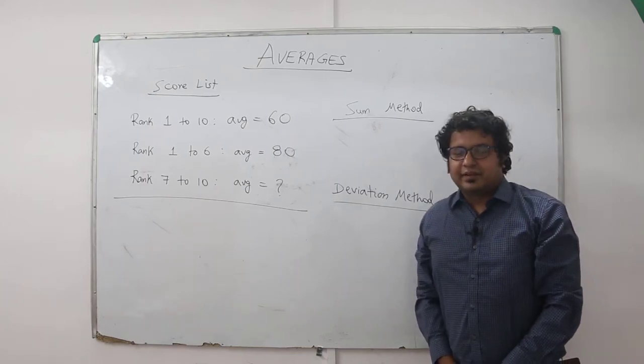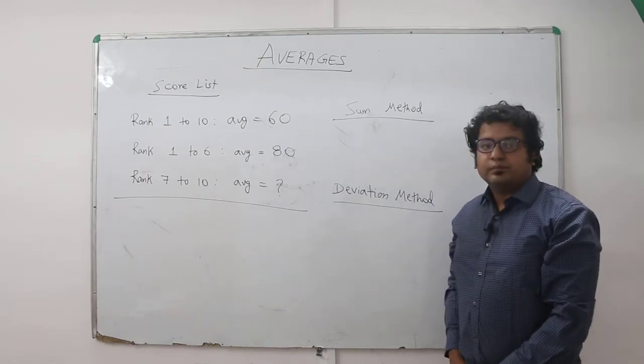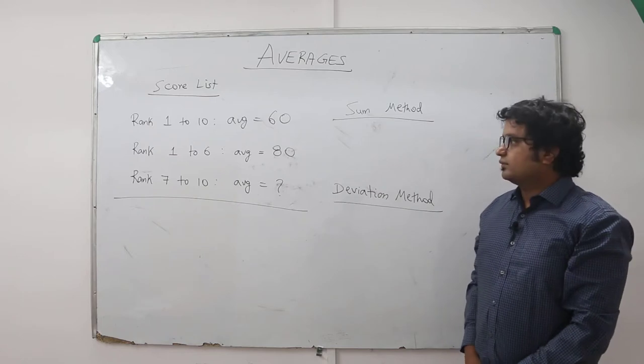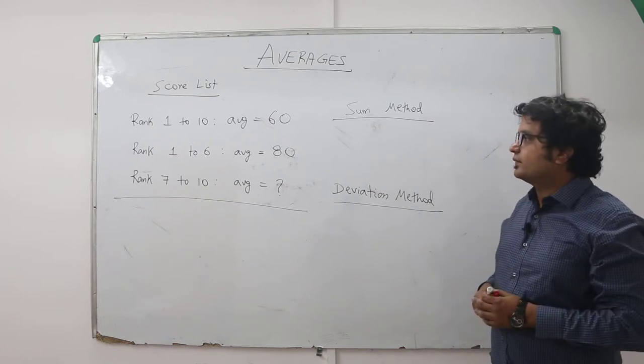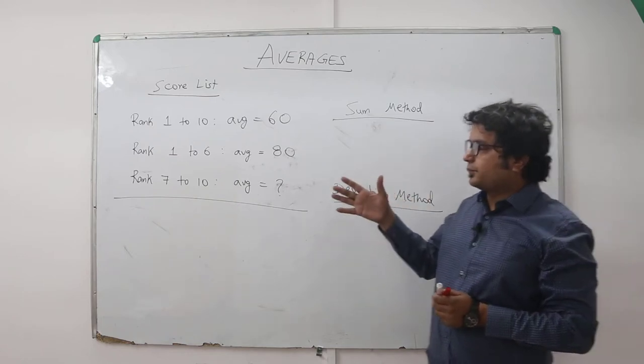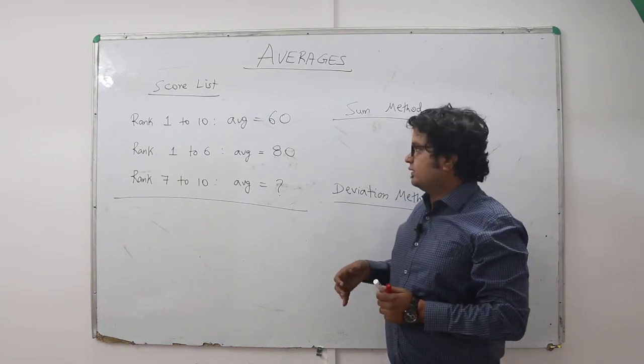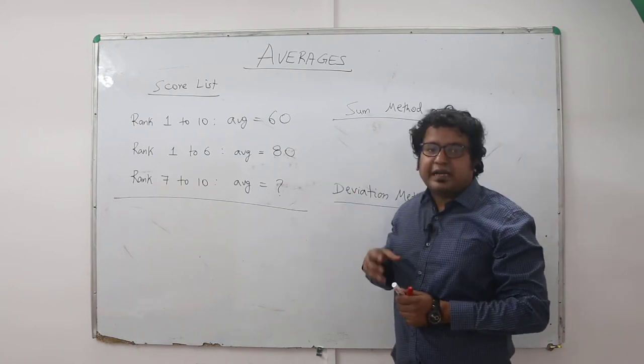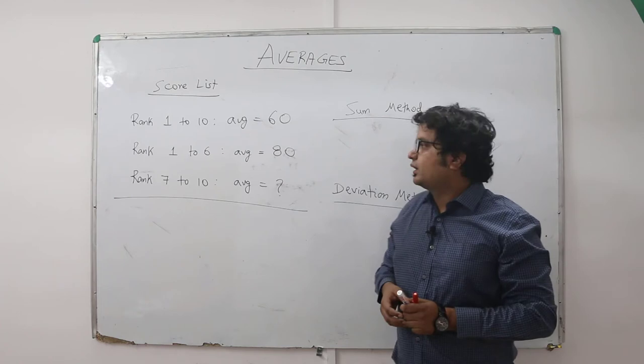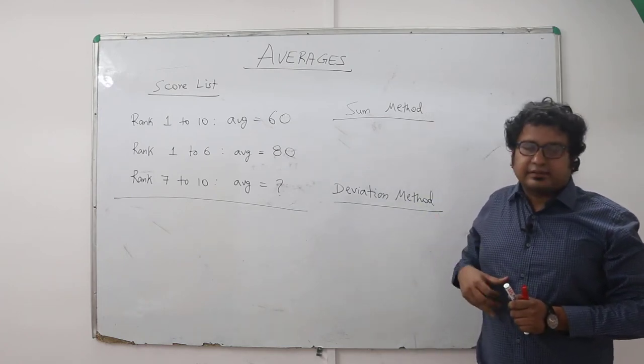Hi guys, we are in the chapter averages now. There is a question. Let's go to the question first. The score list in a particular class has been given. Rank 1 to 10, the average score is 60. Rank 1 to 6, the average is 80.